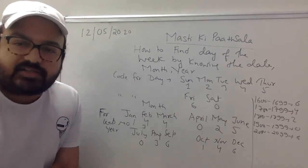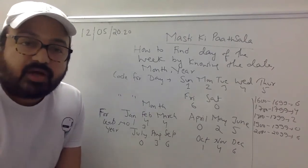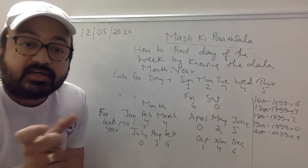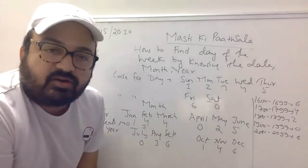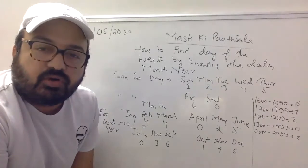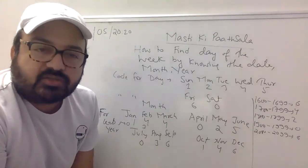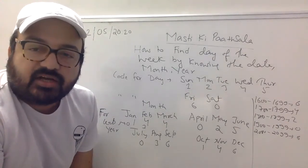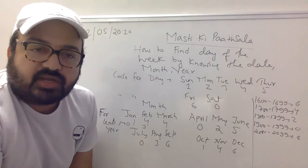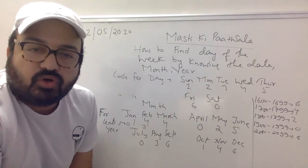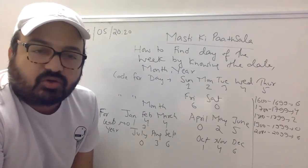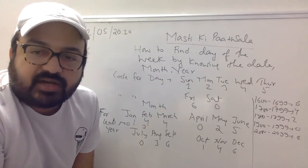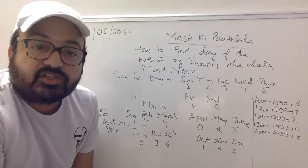ये practice के बाद आ जाएगा। अब आता है years के code: 1600–1699 के लिए code 6, 1700–1799 के लिए 4, 1800–1899 के लिए 2, 1900–1999 के लिए 0, और 2000–2099 का code है 6.